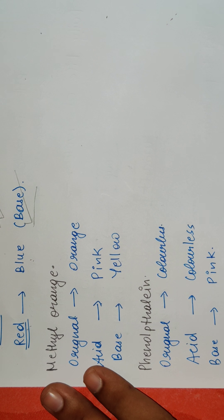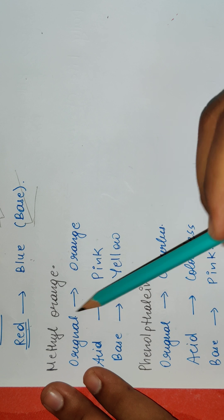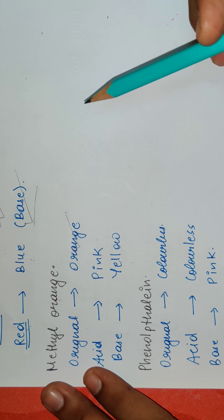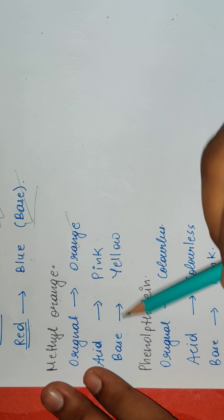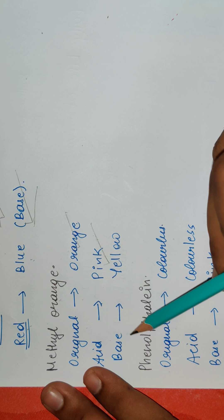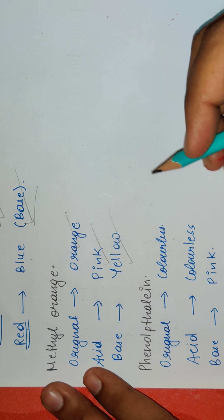Methyl orange is one of the best indicators that we can come across because it has three different color ranges to show. Originally, as the name suggests orange, it is a neutral color. Or when pH is neutral, it is an orange color. When we add acid, it becomes pink. And when we add base, it is yellow.